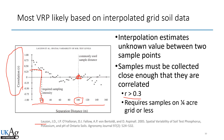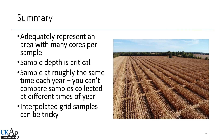In summary: adequately represent your area with as many cores per sample as possible — 10 to 12 cores, or 20 if you can. Sample depth is critical; sampling too shallow or too deep will result in wrong fertilizer recommendations. Sample at roughly the same time each year — you can't compare a spring sample to a fall sample, particularly for potassium. Interpolated grid samples can be tricky; sampling at two and a half or even one acre is not dense enough, but going denser would be too costly and time consuming.